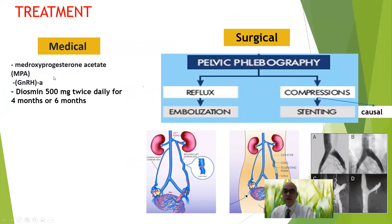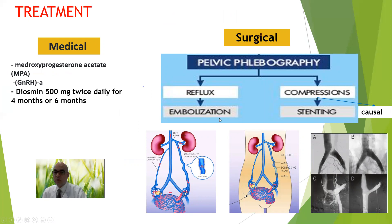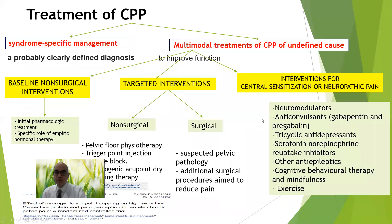Treatment of pelvic congestion syndrome: medical treatments include hormones like medroxyprogesterone acetate, GnRH agonists, or diosmin 500mg twice daily for four to six months. If medical treatment fails, refer for interventional radiology: if reflux is seen, embolization is done by inserting an embolus into the site of reflux; if compressed, treat the cause of compression; if there is obstruction with no compressive cause, stenting of the obstructed vein can be performed.